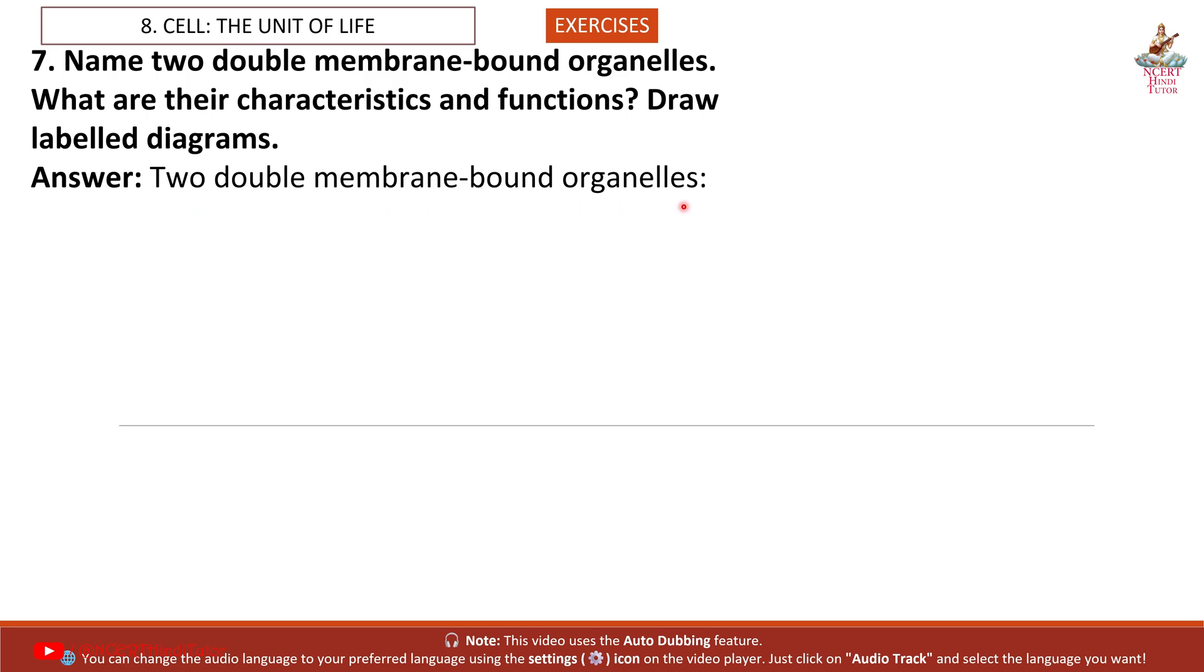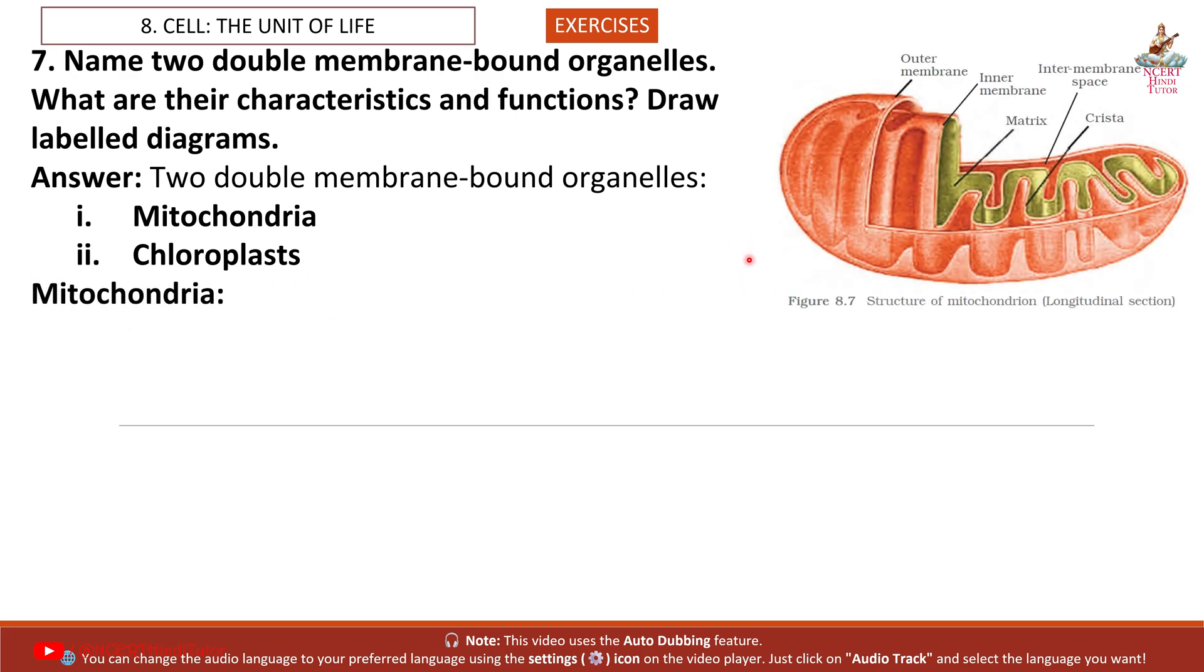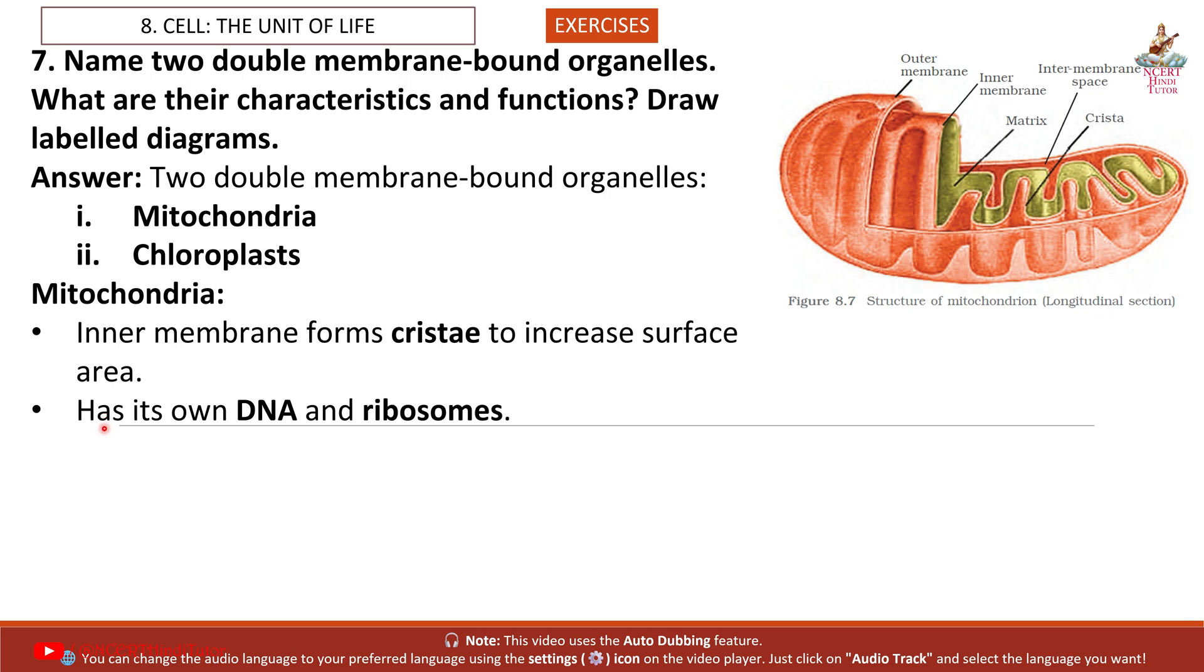Two double membrane-bound organelles: First, mitochondria. Second, chloroplast. Mitochondria: So friends, this is the labeled diagram of mitochondria. Inner membrane forms cristae to increase surface area. Has its own DNA and ribosomes. Site of cellular respiration and ATP production.